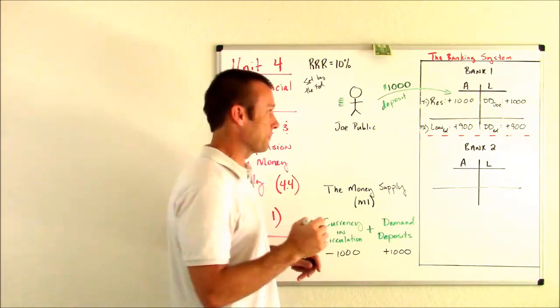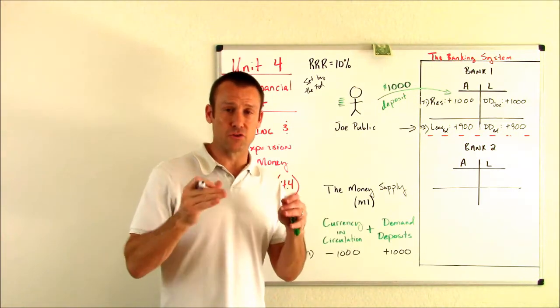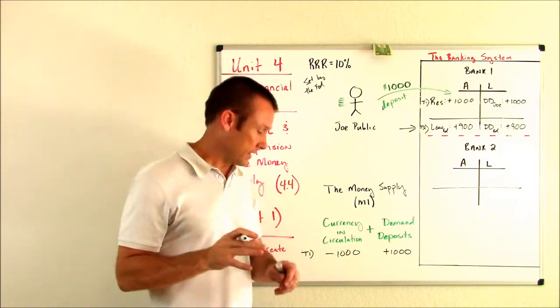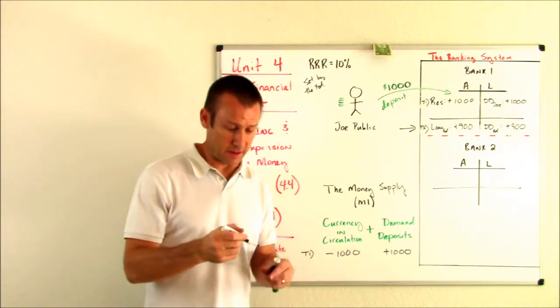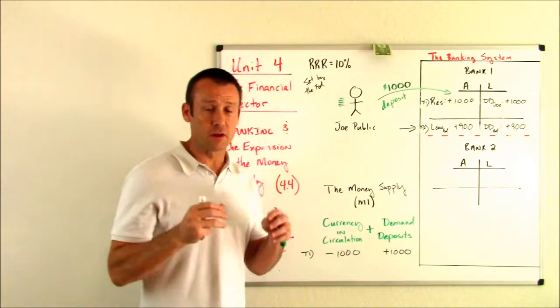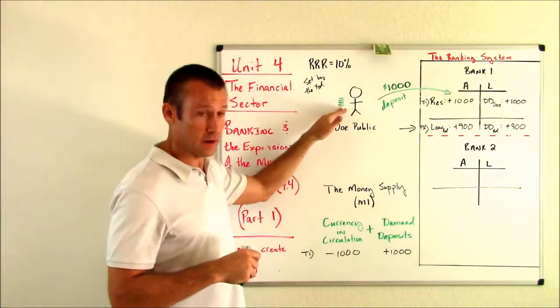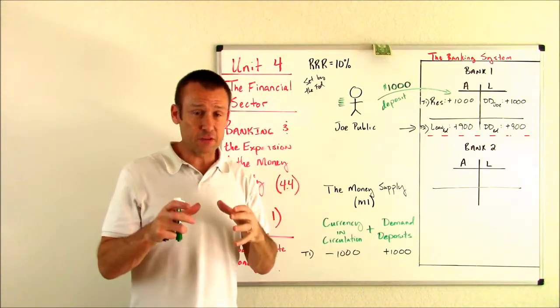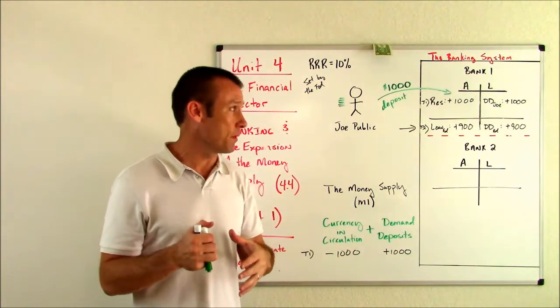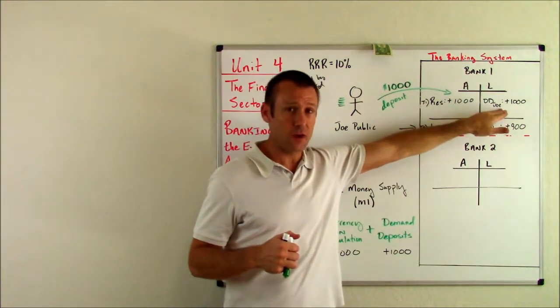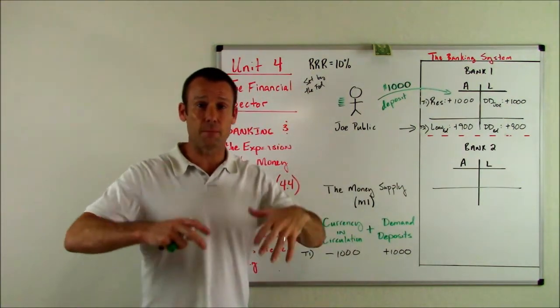Now, something very big just happened. In this T2 right there, money just got created. Loans create money. What do I mean by that? Well, remember at the beginning of this whole thing, how many goods and services can be bought? $1,000 with that currency that Joe had. At this point after the loan, how many goods and services can be bought? Well, Joe can still buy $1,000 and now Ed can buy $900. So the money supply has gone up by $900. It's gone from $1,000 to $1,900.